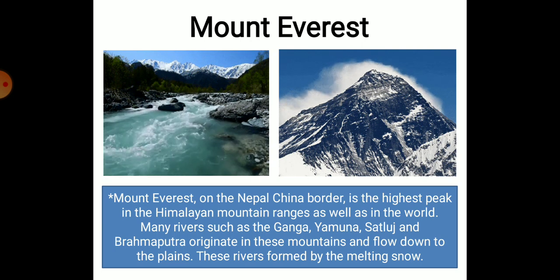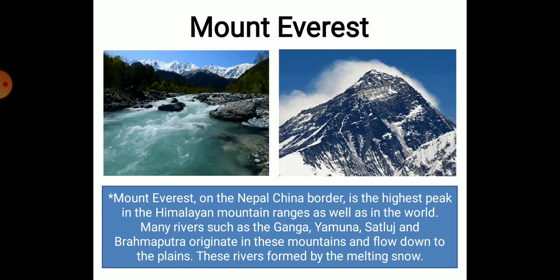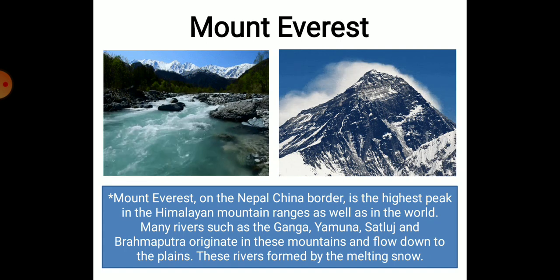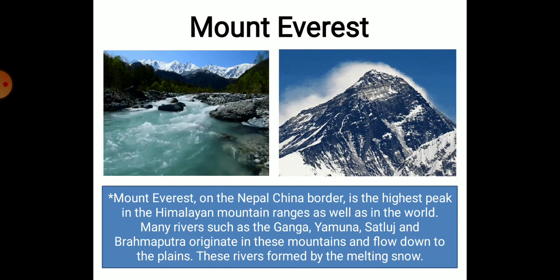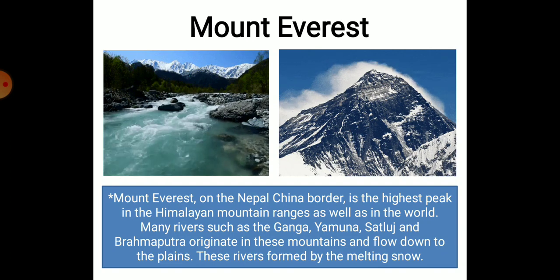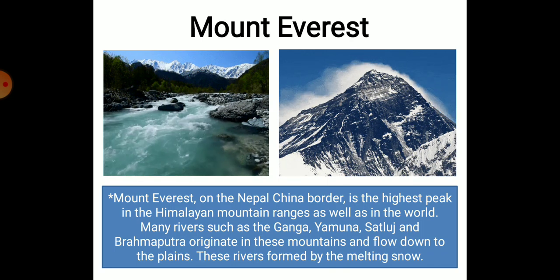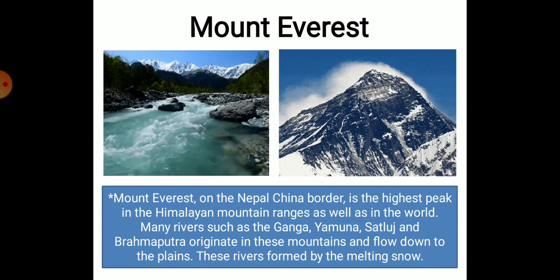It is cold throughout the year. Mount Everest on the Nepal-China border is the highest peak in the Himalayan mountain ranges as well as in the world. Many rivers such as the Ganga, Yamuna, Sutlej and Brahmaputra originate in these mountains and flow down to the plains. These rivers are formed by the melting snow.